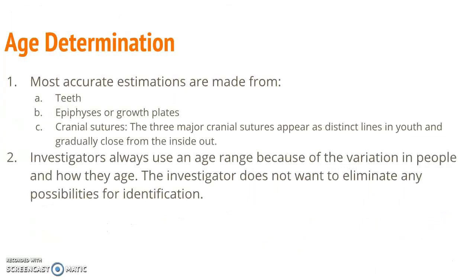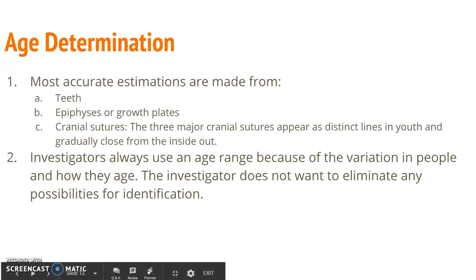When determining age, the most accurate estimations are made from the teeth, the epiphyses or growth plates in the long bones, and the cranial sutures found in the skull. When estimating age, investigators will always use an age range because of the variation in how people age — some people will be skeletally mature at a younger age than others. So they will always say, for example, this person is ages 10 to 15, or the remains are for somebody in their 20s.